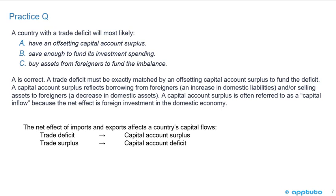Answer A is correct: a country with a trade deficit will most likely have a capital account surplus. A trade deficit must be exactly matched by an offsetting capital account surplus to fund the deficit. A capital account surplus reflects borrowing from foreigners, an increase in domestic liabilities, and/or selling assets to foreigners — a decrease in domestic assets. A capital account surplus is often referred to as a capital inflow because the net effect is foreign investment in the domestic economy.